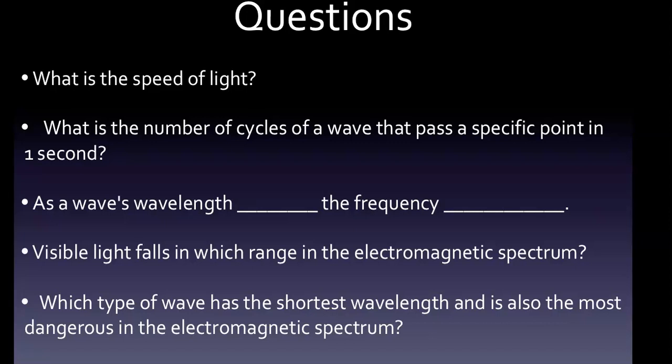So we want to know: What is the speed of light? What is the number of cycles of a wave that pass a specific point in one second? What's the relation between wavelength and frequency? Third question: Visible light falls into what range in the electromagnetic spectrum? And which type of wave has the shortest wavelength and is also the most dangerous in the electromagnetic spectrum?